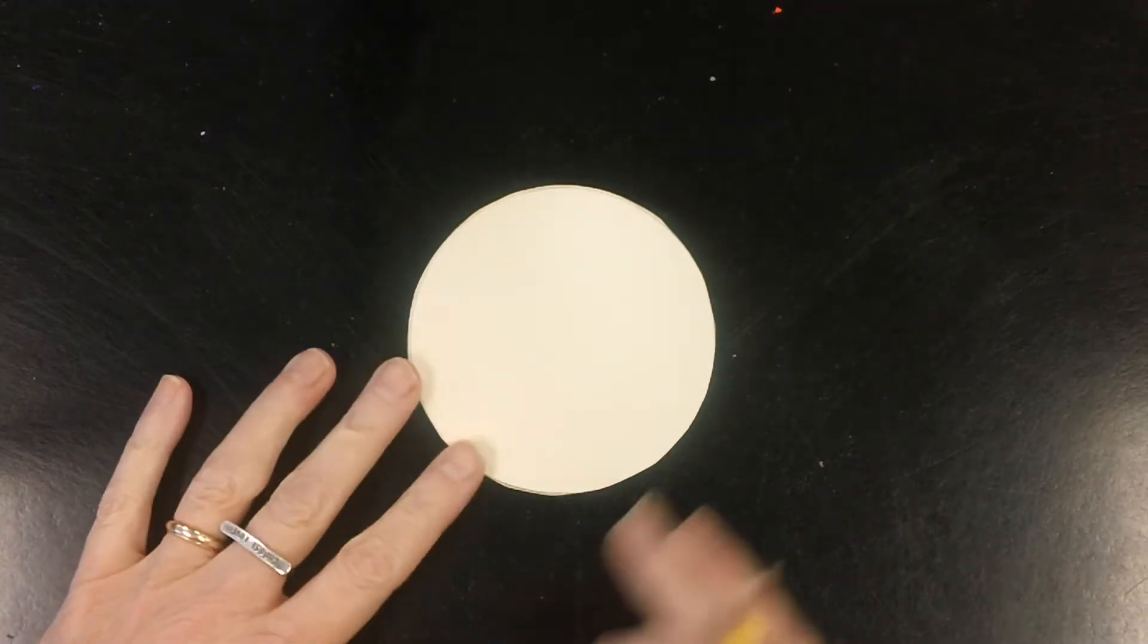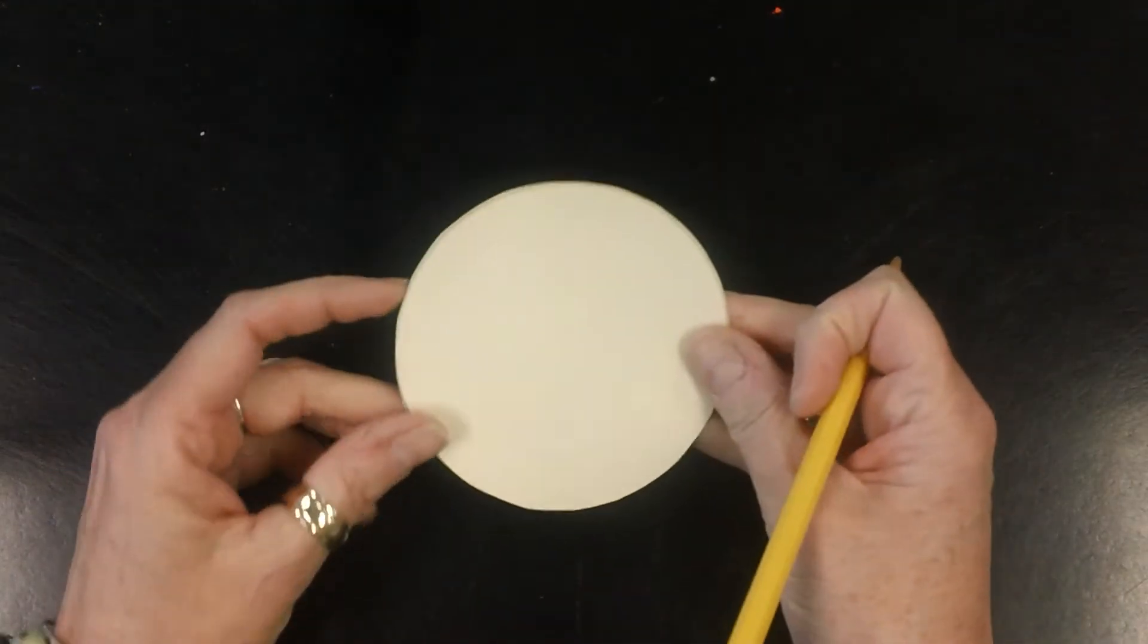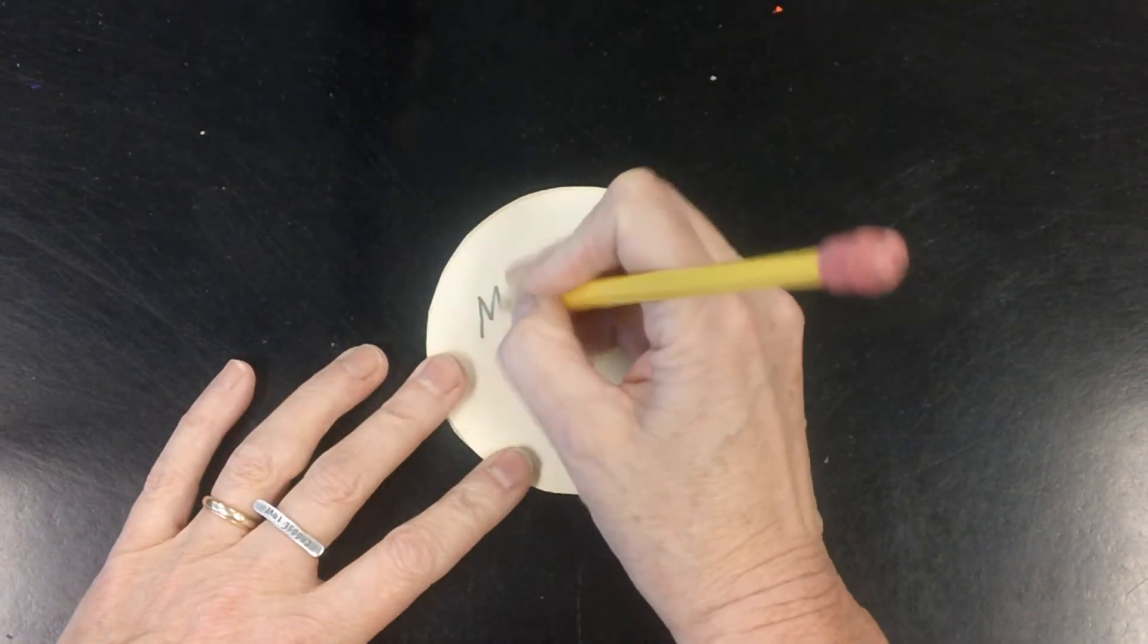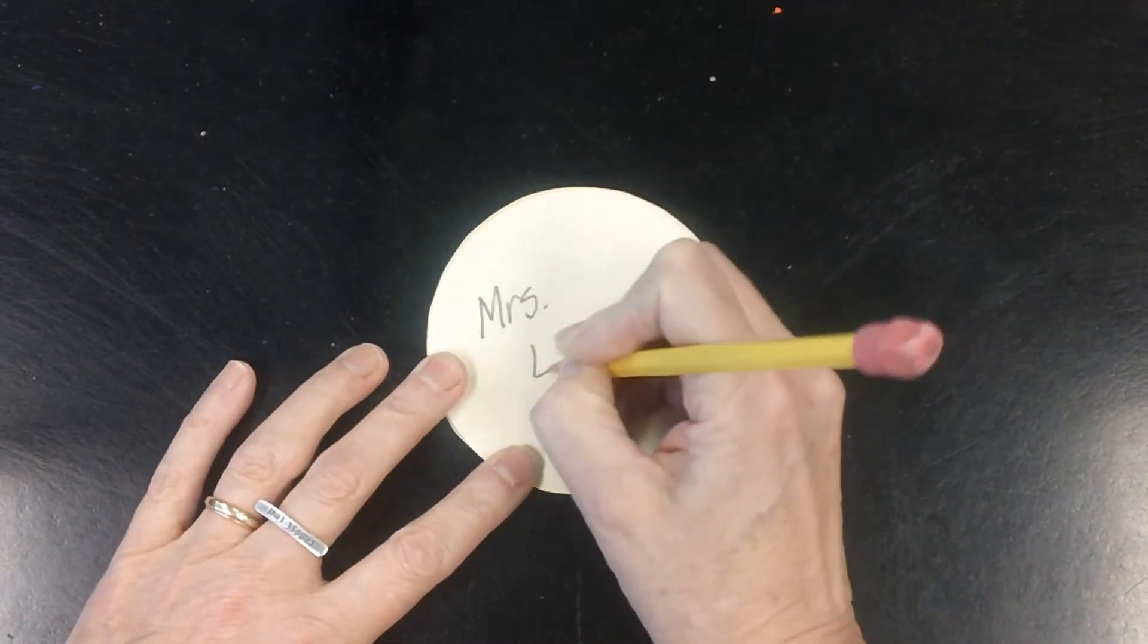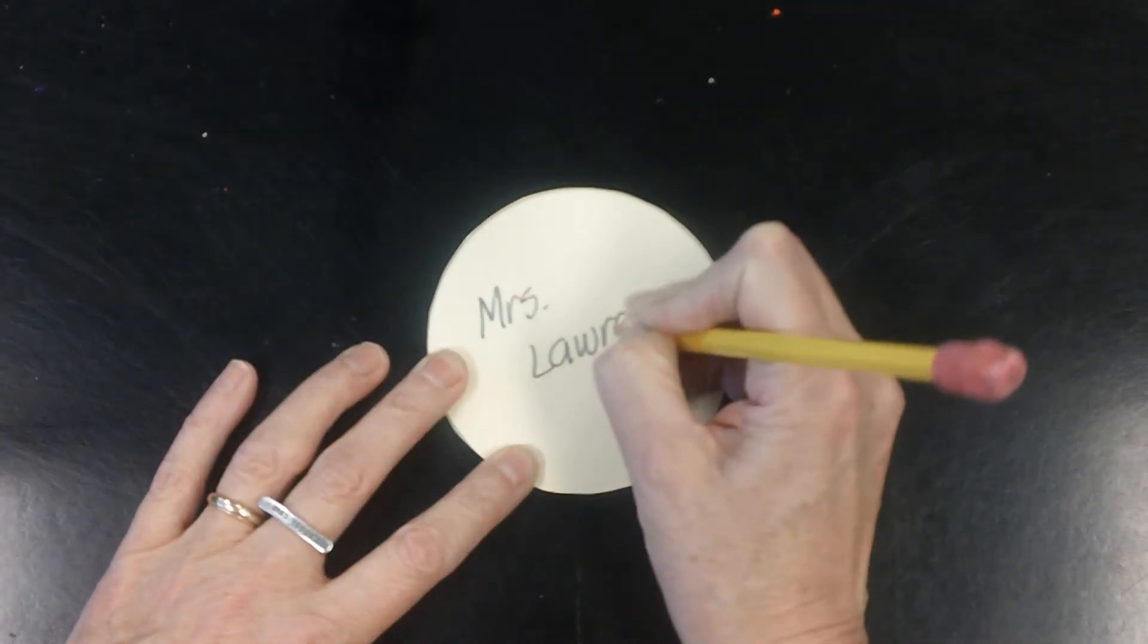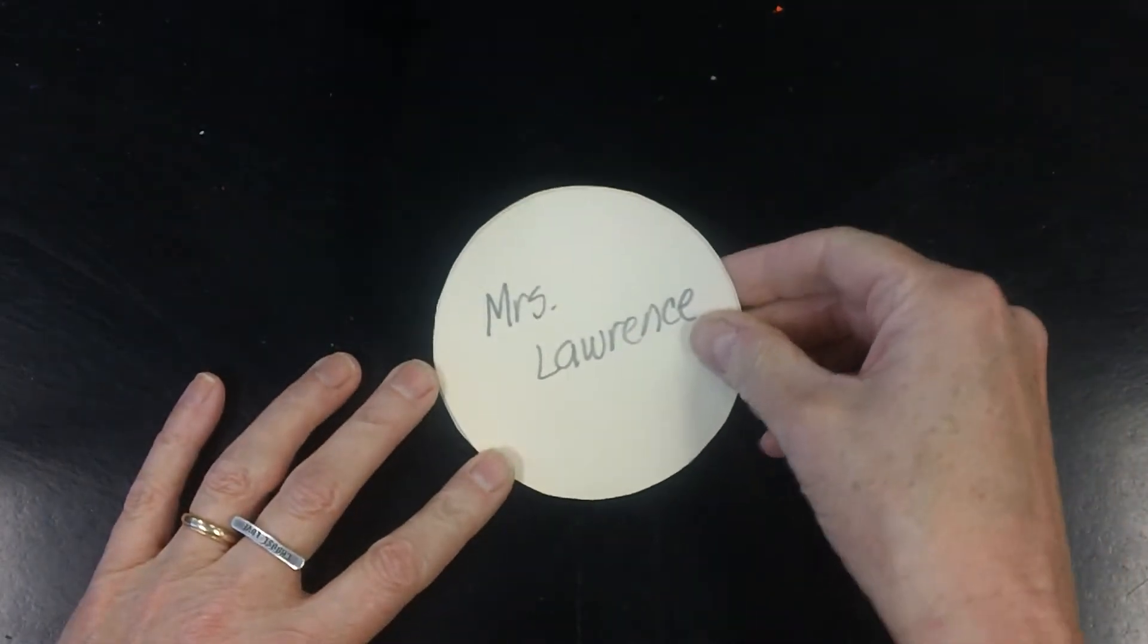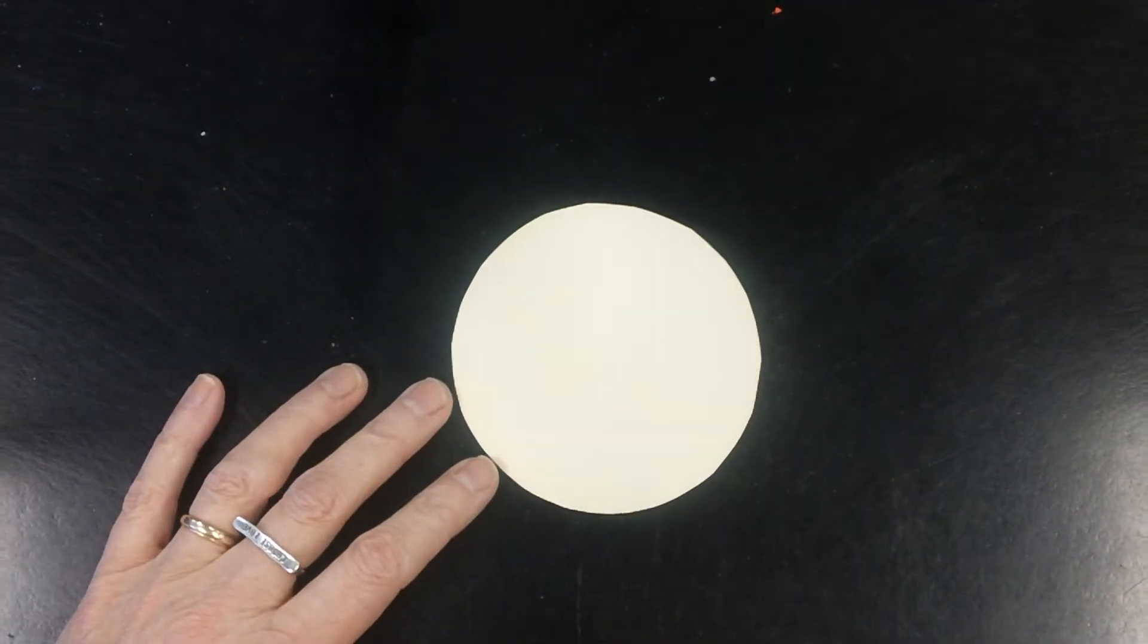And the first thing you're going to get is a circle just like the one I have here. You're going to take a pencil, you're going to put your name on it nice and big so everyone gets their own back. Once you have your name, flip it over so you can't see it.